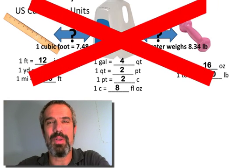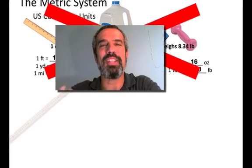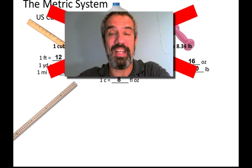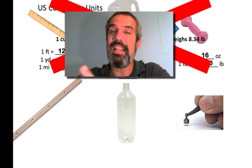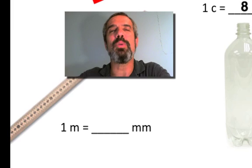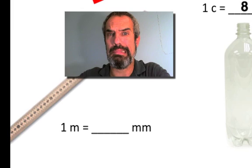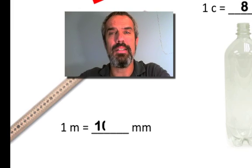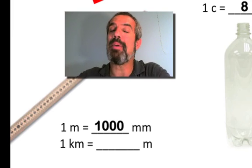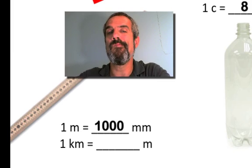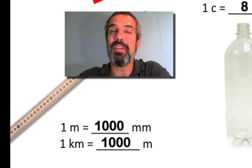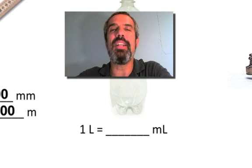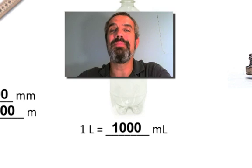The metric system is all based on the meter — the meter, liter, and gram, but it all stems from the meter. Try these: one meter equals how many millimeters? Not twelve or five thousand — it's a thousand. A kilometer equals how many meters? A thousand again, and the word 'kilometer' gives it away: it means thousand meters. A liter equals how many milliliters? A thousand.